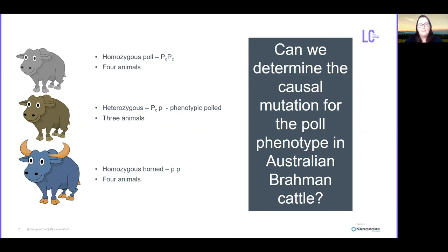three heterozygous animals, and then four horned animals. We examined the hypothesis that the Celtic allele would be segregating in this population, and we wanted to know: can we determine the causal mutation of the polled allele in Australian Brahman cattle using nanopore sequencing?